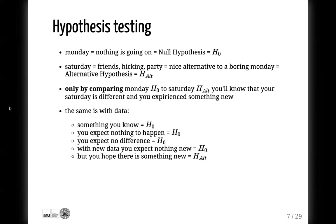The same is with data. If you already know something, it's your null hypothesis. If you don't expect anything to happen, it's your null hypothesis. If you compare things, no difference is your null hypothesis. When you collect some new data, you expect nothing new — which is your null hypothesis. But you hope that your new data shows something new, and that is your alternative hypothesis. Only comparison between things can tell you whether you found something new or different.